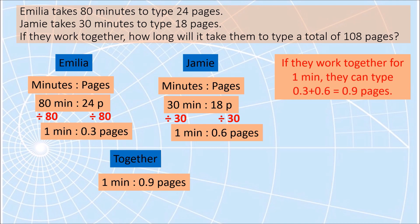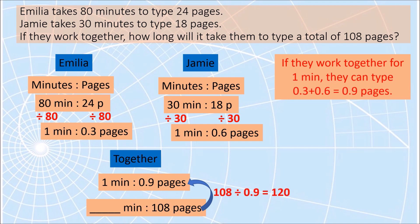So together the ratio is 1 minute is to 0.9 pages. We want to know how many minutes they need to type 108 pages. Since it is not easy to mentally find what to multiply 0.9 by to get 108, we divide 108 by 0.9, which gives 120. So we multiply 0.9 by 120 to get 108, and do the same on the other side — 1 minute times 120 gives 120 minutes. Working together, Emilio and Jamie can type 108 pages in 120 minutes.